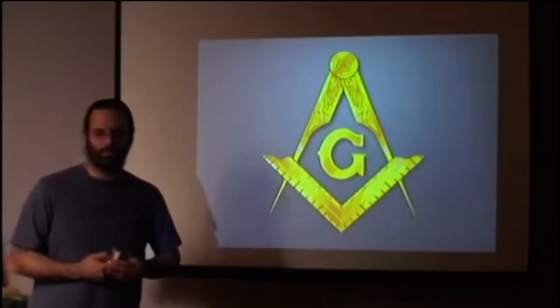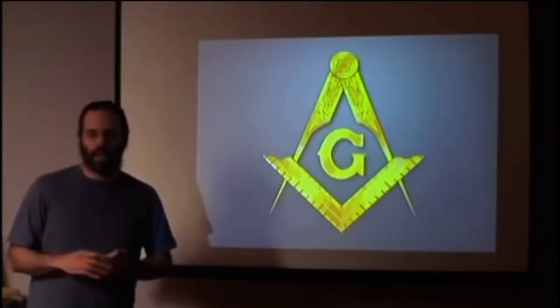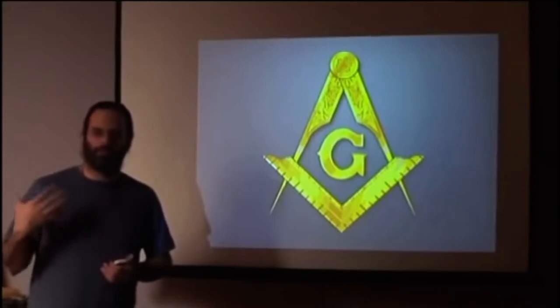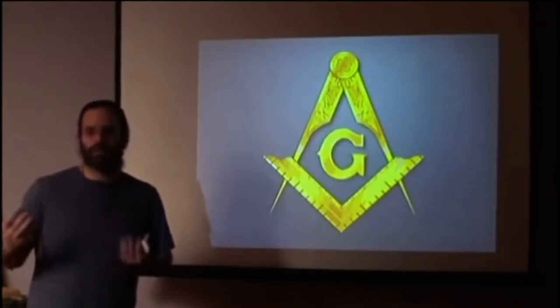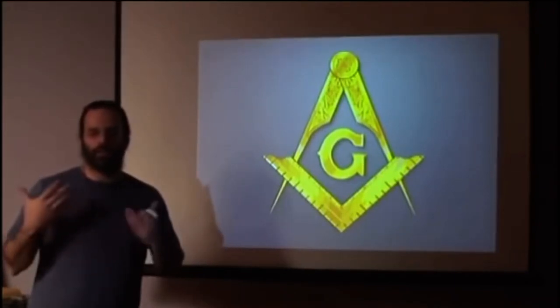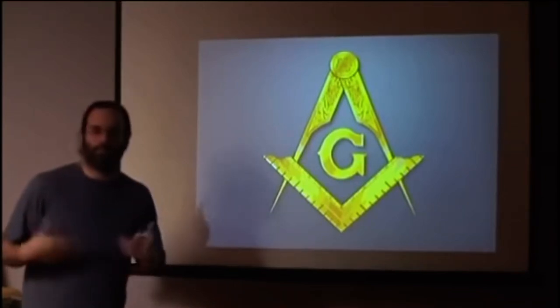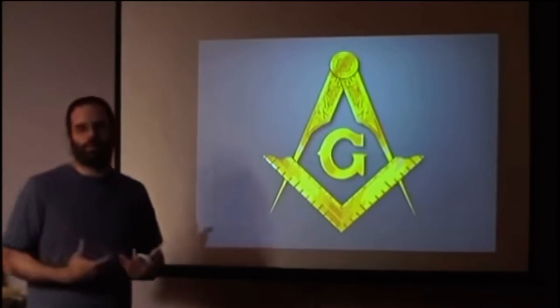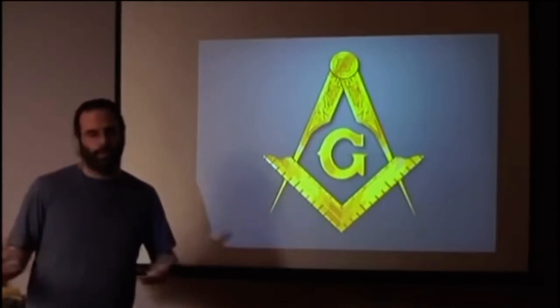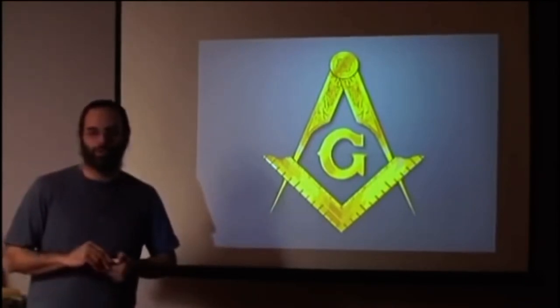We're going to talk about Freemasonic symbology, and I want people to understand that Freemasonry in and of itself is not an evil ideology. It is an occult system of knowledge that can be used for good or it can be used for ill or manipulation, depending on who is wielding that knowledge.